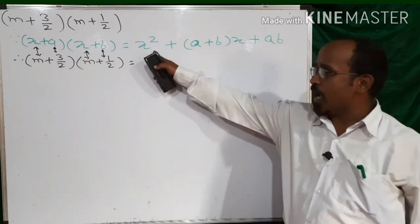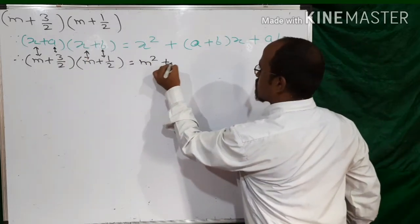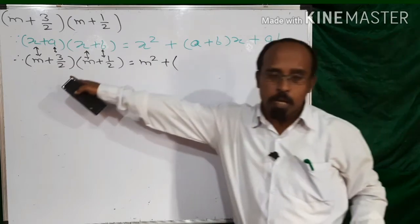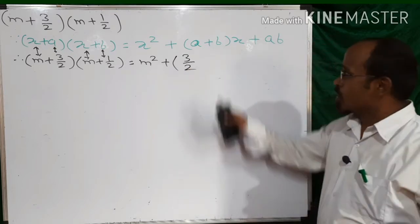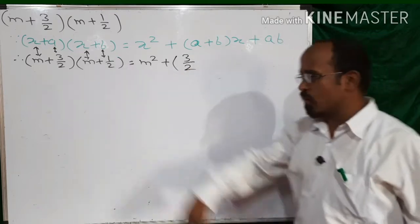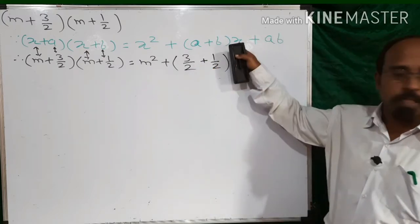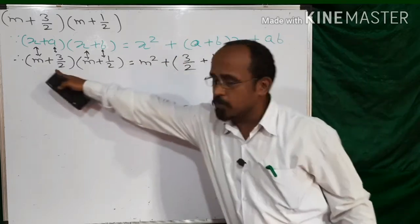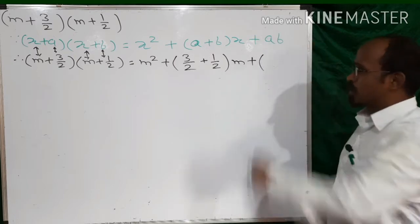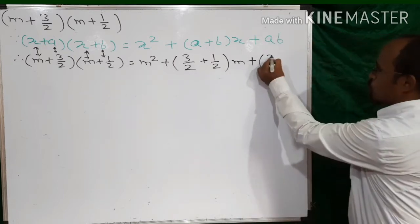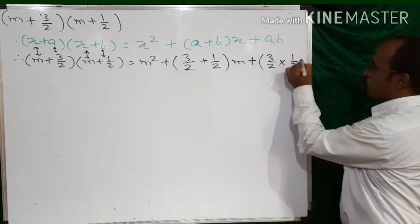Let's replace the values in the formula. x² means m², plus into the bracket: a is replaced by +3/2, plus b is replaced by +1/2, bracket closed, multiplied by x which is m. Plus a multiplied by b: a is +3/2 multiplied by b which is +1/2.